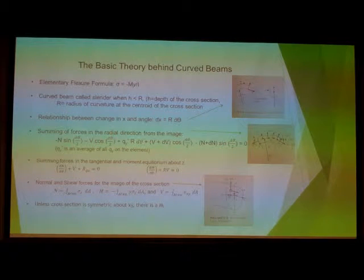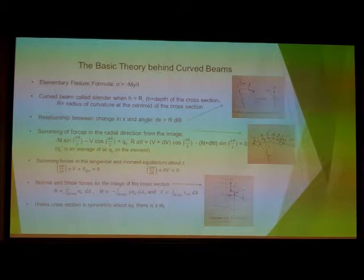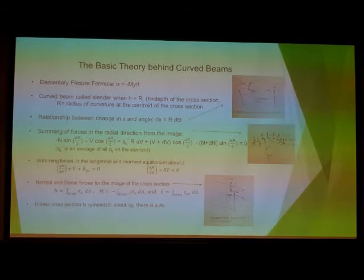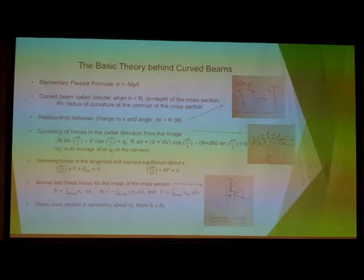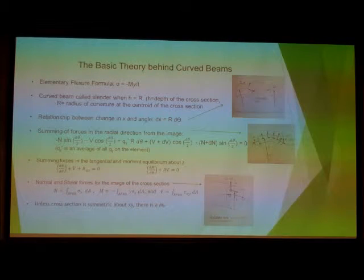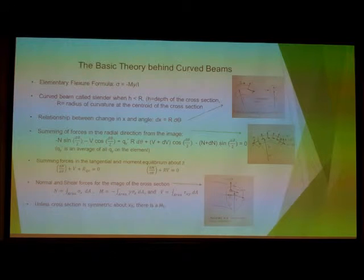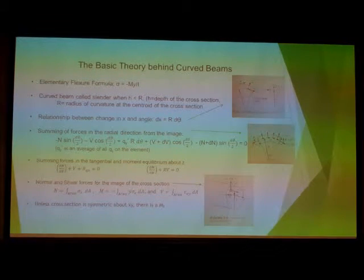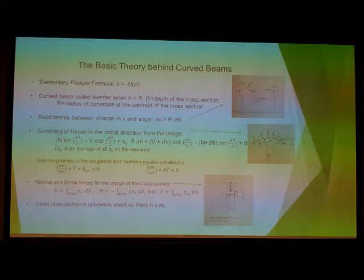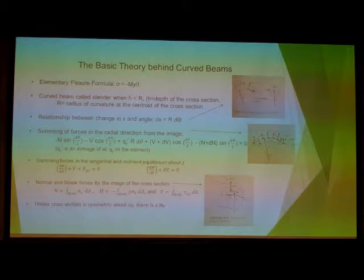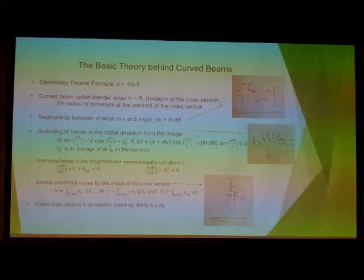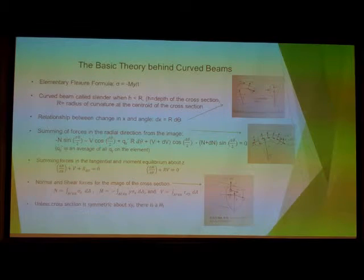So, here's some of the basic theory. We can start with the elementary flexural formula, which we know is a moment over inertia. Actually, I was reading that if the curved beam has a depth of a cross-section that's less than the radius of curvature, and you can use this top picture here, that it's considered slender. So, if it's slender, you have H is less than R. And actually, it's actually that when looking at all of these equations, there's four main topics. There was the geometry of the region, there's the loading that applies in the region, the equilibrium, and the deformation. So, for the deformation, we have the relationship between the change in X from the top picture. There's your axis is in the XY, and you have the relationship between the two of your rotation and your X. The change in X is equal to the radius times the change in the angle.